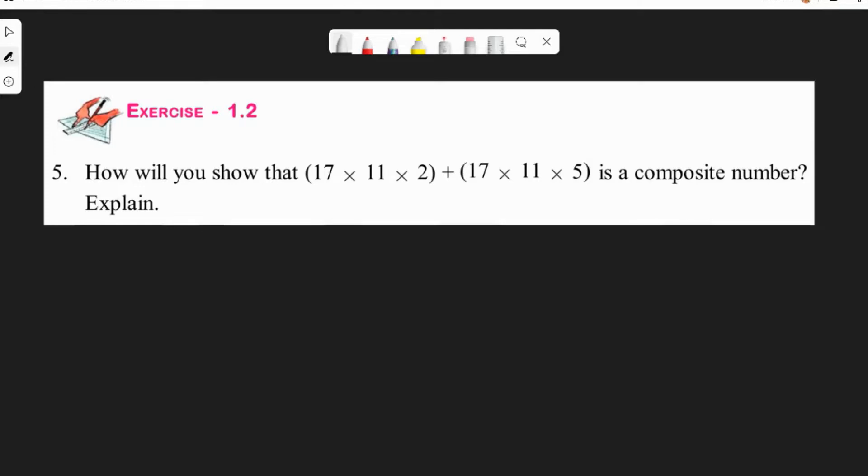How will you show that (17 × 11 × 2) + (17 × 11 × 5) is a composite number? Similar to the previous sum, let's write it down: (17 × 11 × 2) + (17 × 11 × 5).